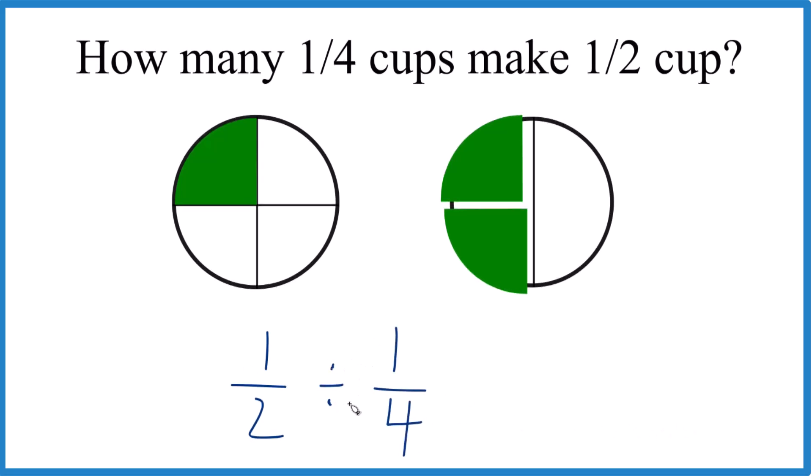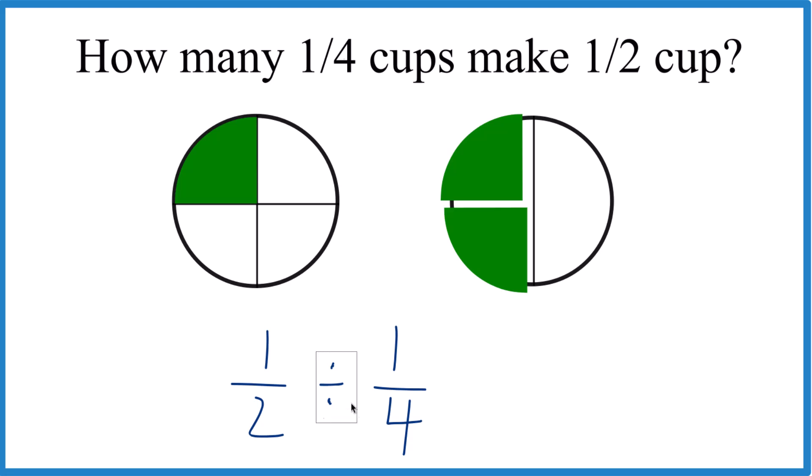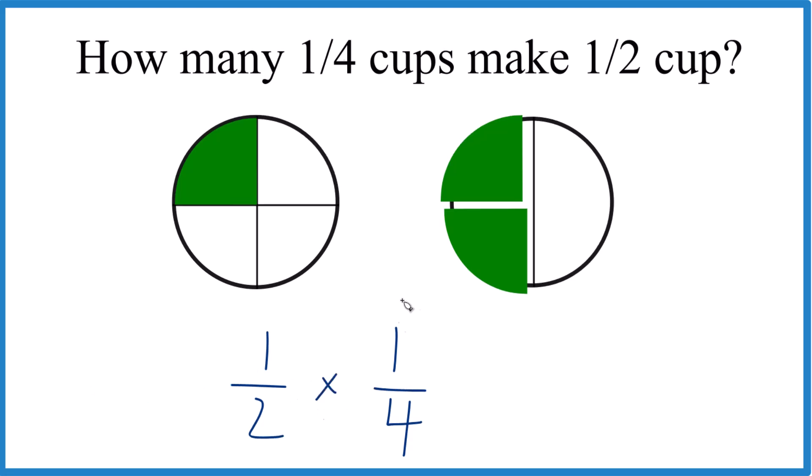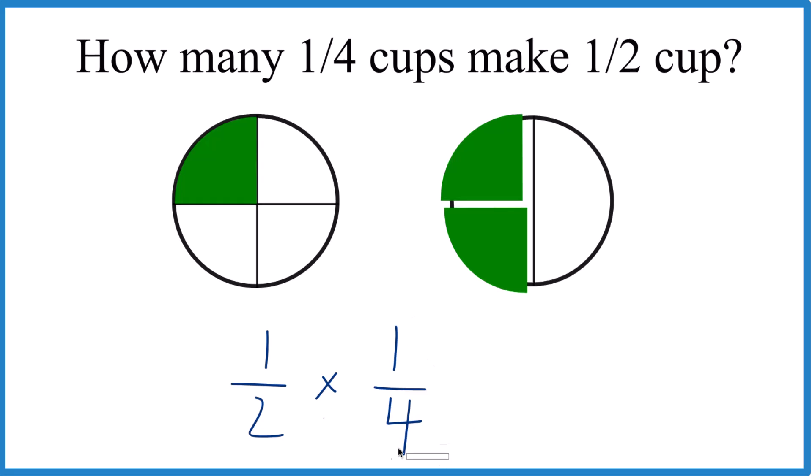So when we divide fractions, instead of division, what we like to do is we get rid of the division. We call it multiplication, but we multiply by the reciprocal of this number here. So we put the four on top, and the one goes on the bottom. That's the reciprocal.